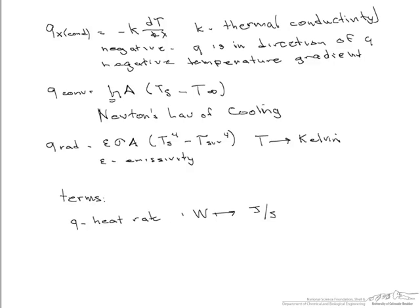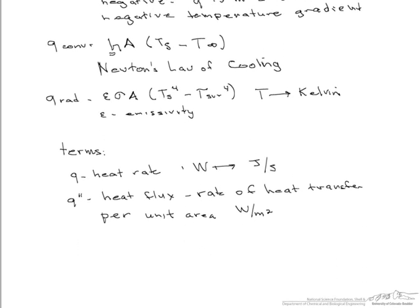We also see what's known as the heat flux. And the heat flux is actually the rate of the heat transfer. In other words, Q per unit area. Therefore its units are watts per meter squared. You might also see Q prime, which is our heat rate per unit length. Units for this are watts per meter. And you'll see, depending on the mode and the situation of heat transfer, that some of these terms are used and some of them are not.